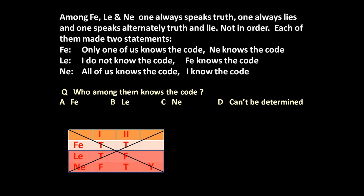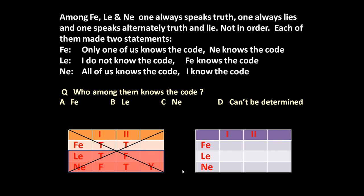Let us prepare the table again and now assume Li made two true statements. Li says 'I do not know the code' — true. Li says 'Phi knows the code' — true. So Phi knows the code; we put a Y mark for Phi.